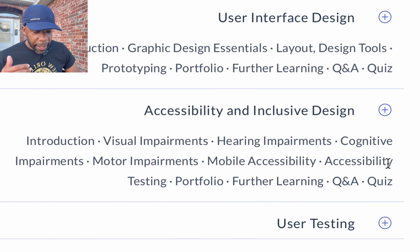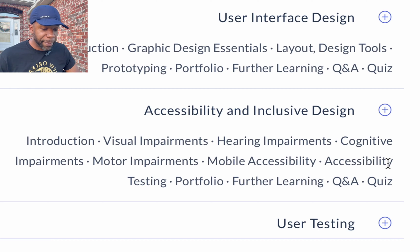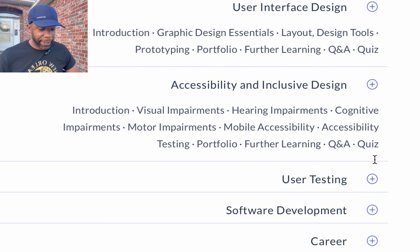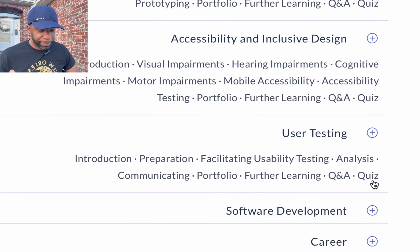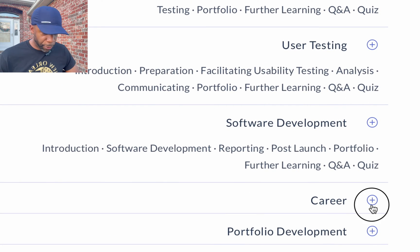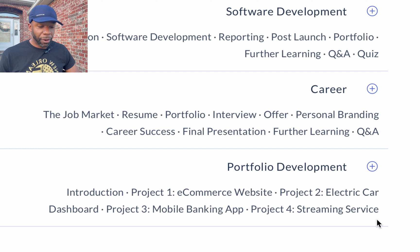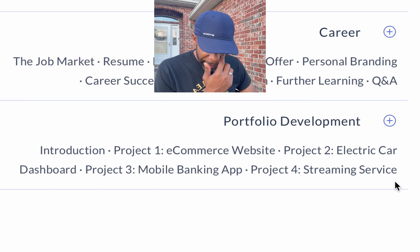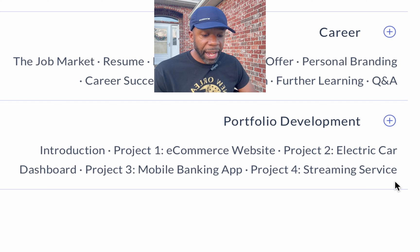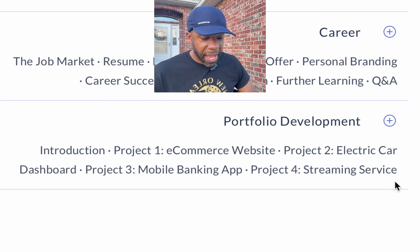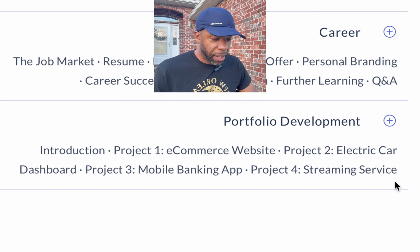Further in the course there's interaction design, user interface design, accessibility and inclusive design — covering visual impairments, hearing impairments, cognitive impairments — then user testing, software development, career guidance, and portfolio development, including actual projects like a mobile banking app and a streaming service project.